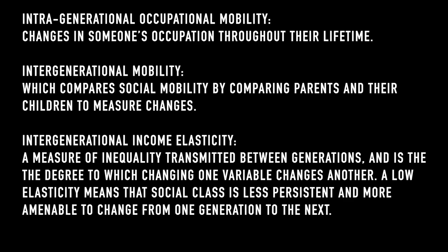Two key concepts sociologists use to understand social mobility are intragenerational occupational mobility and intergenerational mobility. Intragenerational occupational mobility refers to changes in someone's occupation throughout their lifetime or life course, while intergenerational mobility compares social mobility between parents and their children to measure changes. The concept of intergenerational elasticity is also important — it is a measure of inequality transmitted between generations and the degree to which changing one variable changes another. A low elasticity, as exists in Denmark for example, means that social class is less persistent and more amenable to change from one generation to the next.